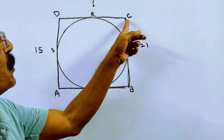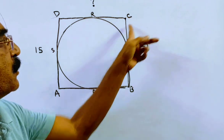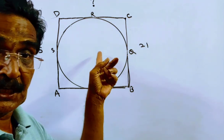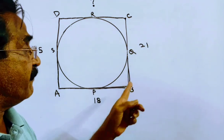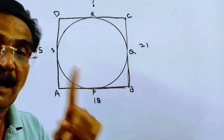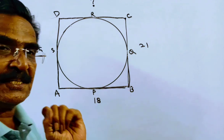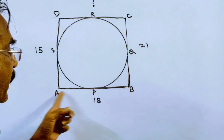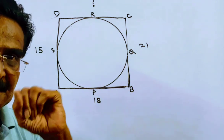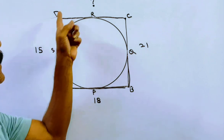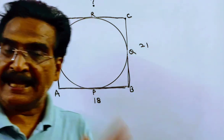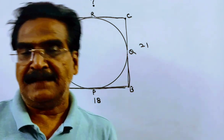Friends, C,R and C,Q are tangents to the circle. In the same way, B,Q and B,P are tangents to the circle. A,P and A,S are tangents to the circle. D,R and D,S are tangents to the circle.